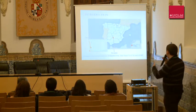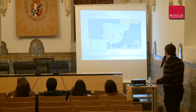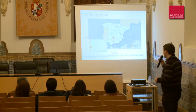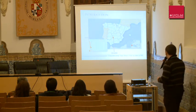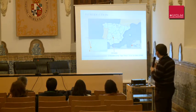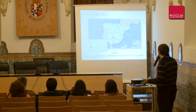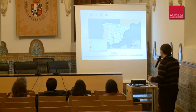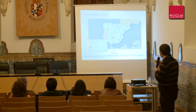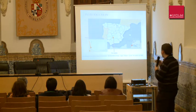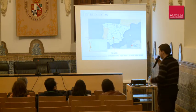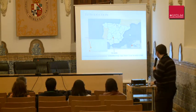We locate Almadén on the map in the southwestern corner of the Ciudad Real province. This mine has been producing until 2002, when the European Union forbade the extraction of this metal.